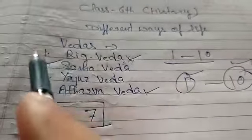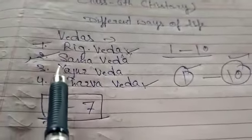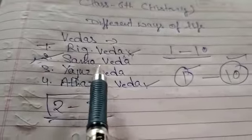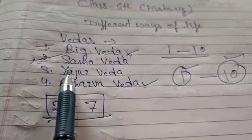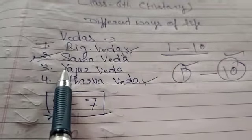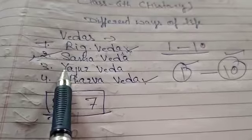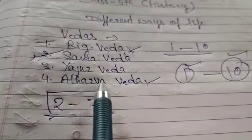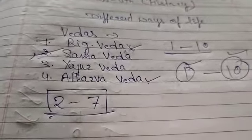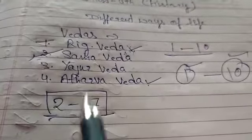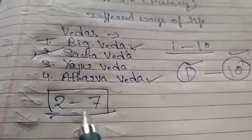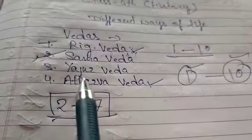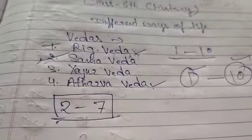The second Veda is Sam Veda. Sam Veda is related to songs and melodies. It is associated with musical hymns and chanting.